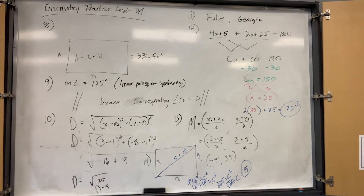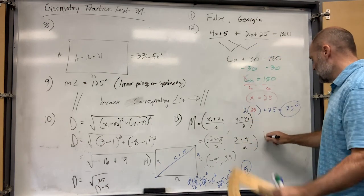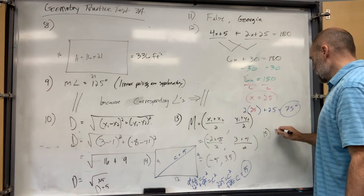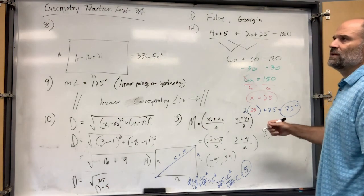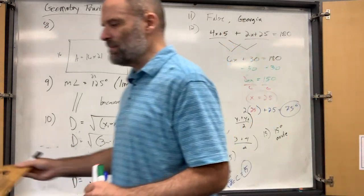Number fifteen: use a protractor to find the measure and classify the angle. The measure is 15 degrees, which is an acute angle. Make sure you measure it — 15 degrees — and don't forget to classify it as acute, obtuse, right, or straight.